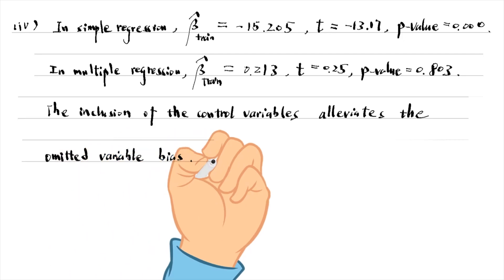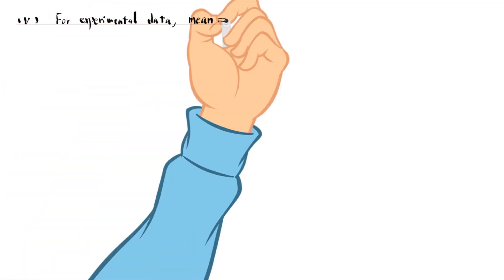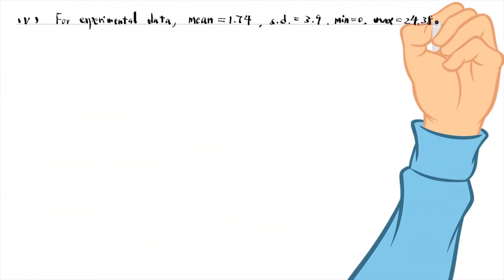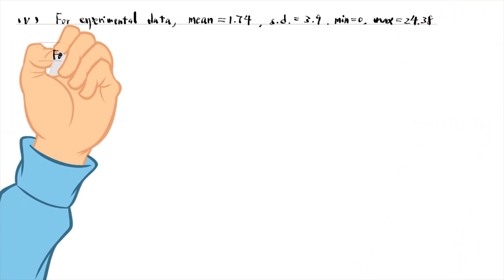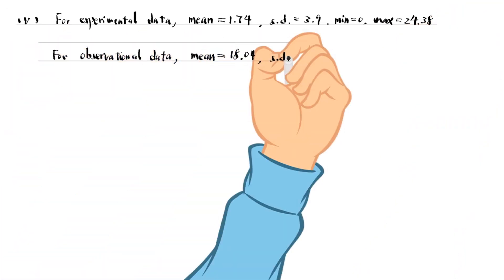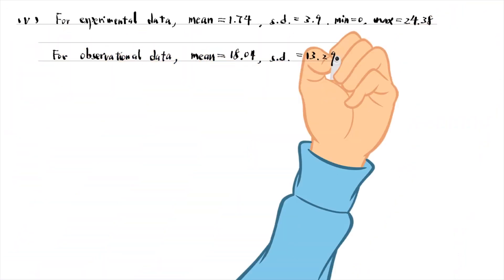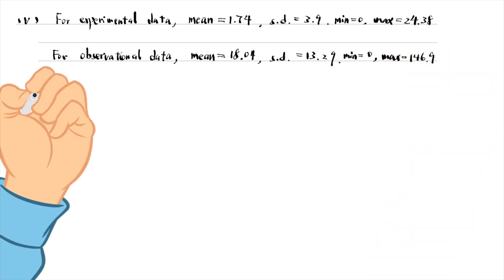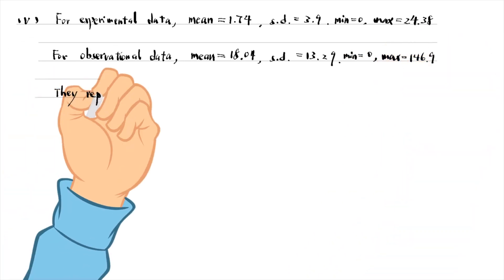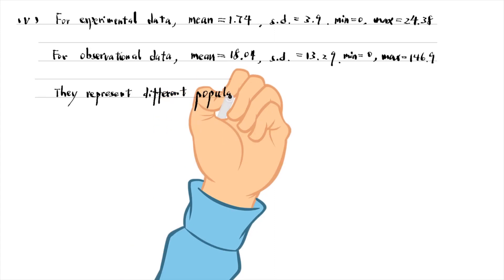In part 5, the average of the 1974 and 1975 earnings differs substantially between the experimental data and the observational data. Obviously, they represent different populations.